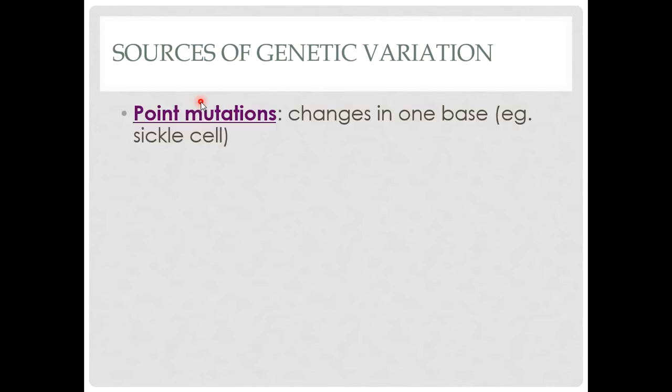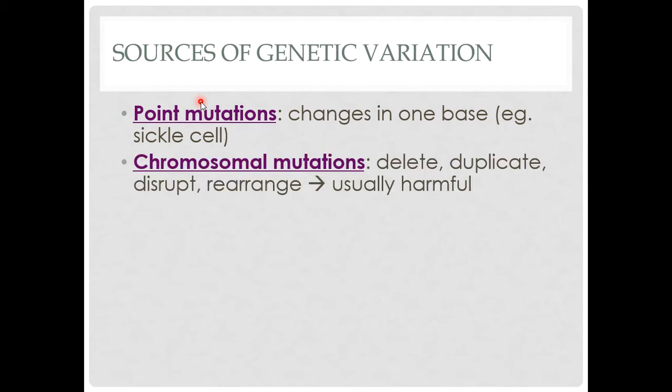To recap the sources of genetic variation: there are point mutations, where a single base changes in your DNA — just a single A, T, C, or G changes to a different letter. That can have huge effects or no effect at all. In the case of sickle cell, a single point mutation has a gigantic effect on the shape of red blood cells and their ability to carry oxygen. Just a single change can mean nothing or it can mean everything.